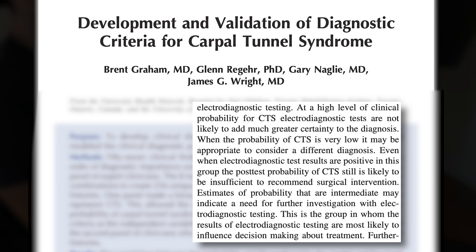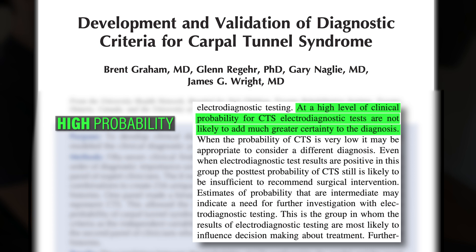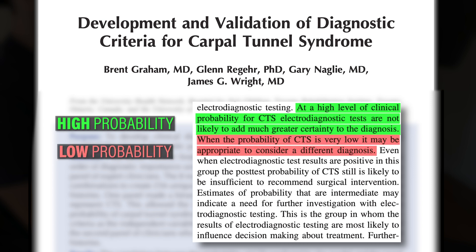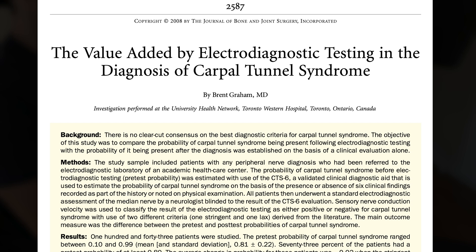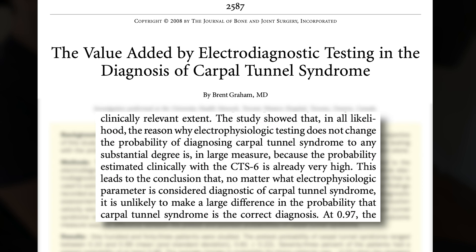The authors concluded that if the CTS-6 results indicate high probability, electrodiagnostic tests are not likely to add much greater certainty to the diagnosis. If there is a low probability, it would be appropriate to consider a different diagnosis. If results are somewhere in between, it may indicate a need for electrodiagnostic testing since results can influence treatment decision making. In 2008, Graham further supported the clinical use of the CTS-6, concluding that electrodiagnostic testing does not change the probability of diagnosing carpal tunnel syndrome to any substantial degree because the probability estimated clinically with the CTS-6 is already very high.